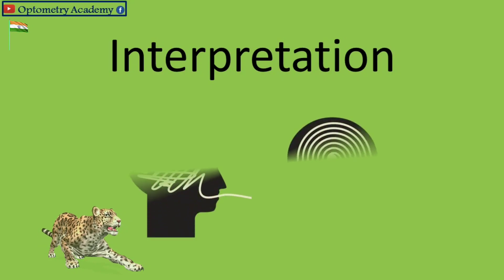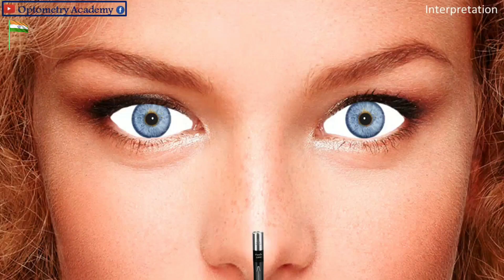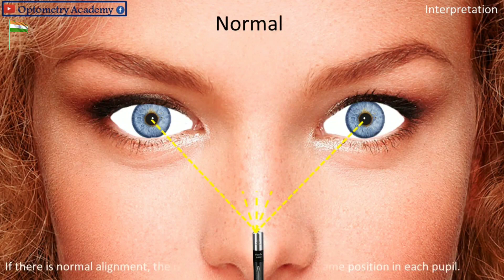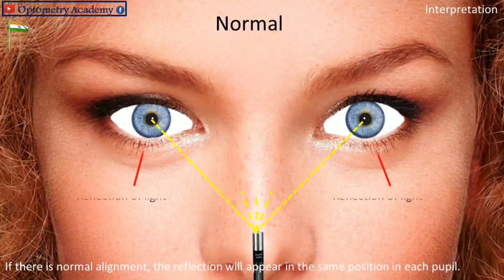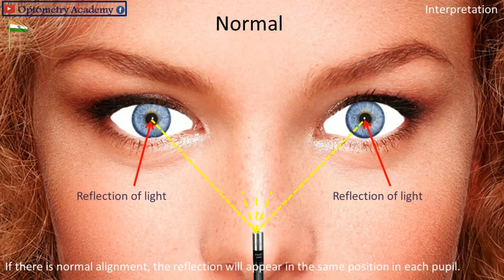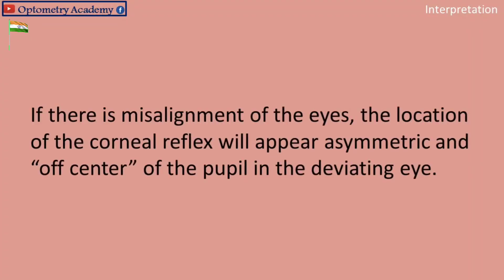Interpretation — Normal: If there is normal alignment, the reflection will appear in the same position in each pupil. If there is a misalignment of the eyes, the location of the corneal reflex will appear asymmetric and off-center of the pupil in the deviating eye.